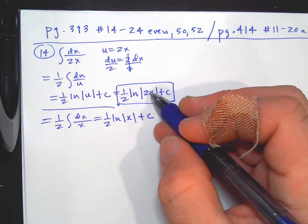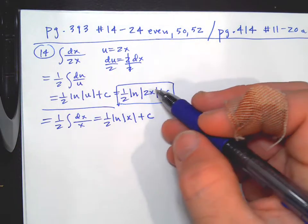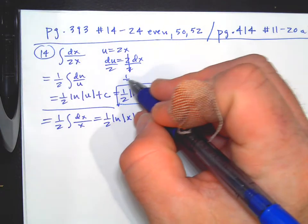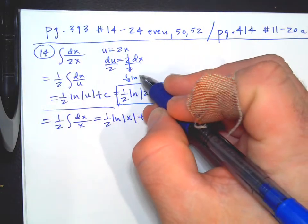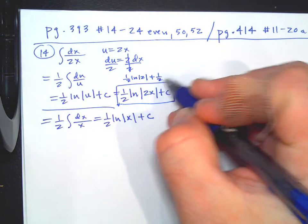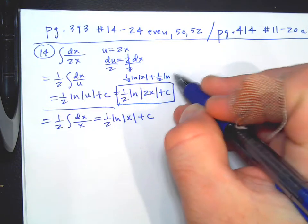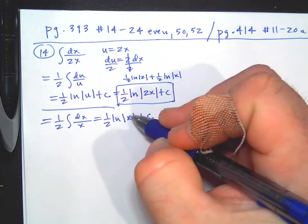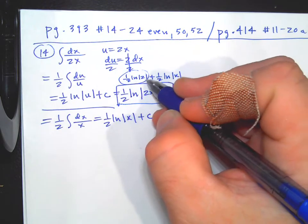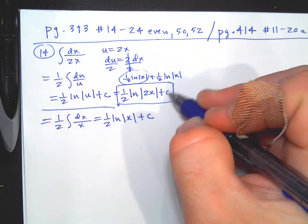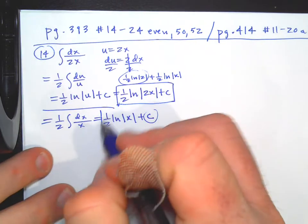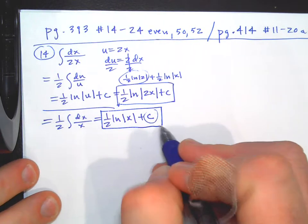Really, at the beginning we could have just brought the two out in front and said one-half natural log of |x| plus C. It looks different but it's actually the same answer — the difference gets absorbed into the C value because of log rules. You can break logs apart or bring them back together, so this one has an extra one-half natural log of two which gets bundled into C. Depending on how you did it, you get different-looking answers.